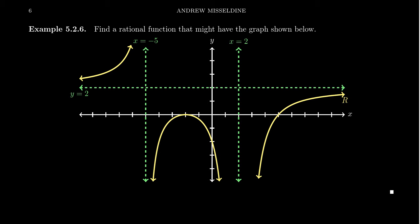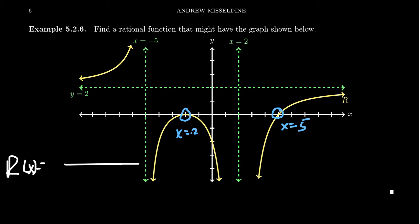Some things we can look at are the x-intercepts. We have an x-intercept at negative two and an x-intercept at positive five. So we're building a rational function r(x) — a numerator and a denominator. I'll get factors in the numerator based on the x-intercepts. Since x = −2 is an x-intercept, I need the factor (x + 2) in the numerator. Since x = 5 is an x-intercept, I need the factor (x − 5) in the numerator. The numerator gives you the x-intercepts of your rational function.